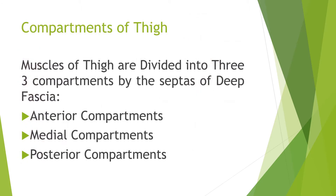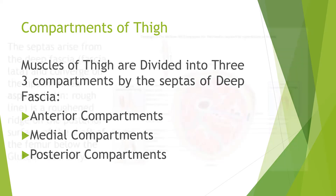The muscles of the thigh are divided into three compartments, separated by the septa of the deep fascia. The septa of the deep fascia form the compartments, dividing the thigh into the anterior compartment, the medial compartment, and the posterior compartment. This is the medial compartment of the thigh, also known as the medial aspect of the thigh.